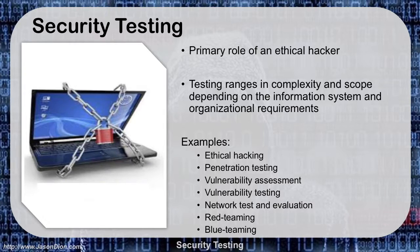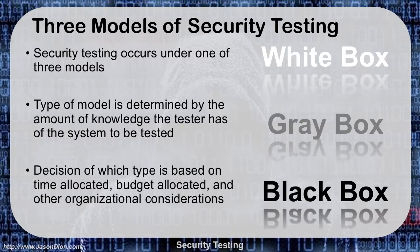All these are different types of security tests that we do, and in general, they have a couple of main categories. There are three different modes we can talk about with security testing: white box, gray box, and black box. Security testing occurs under one of those three models. The type of model is going to be determined by the amount of knowledge that you, the tester, have about the system that you're going to be testing.